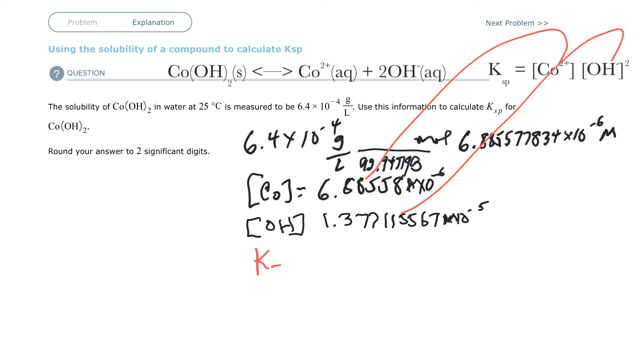So that means that Ksp equals 6.88558 times 10 to the minus 6 times 1.37712 times 10 to the minus 5 squared.